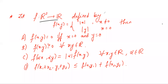Hello friends! In this video, we look at the solution to a problem from CSI NET June 2020. This problem is from section C and hence it can have multiple correct options. The problem states that if f is a function from R² to R defined by f(x, y) equals mod x if x ≠ 0, and mod y if x = 0, then which of the following statements are true.